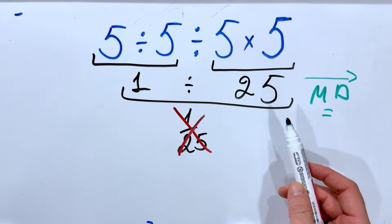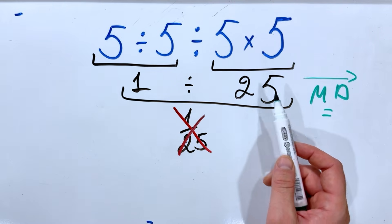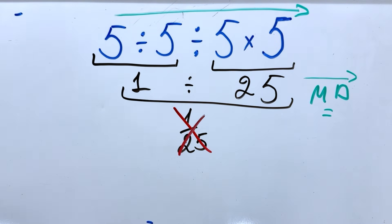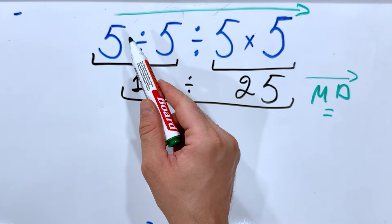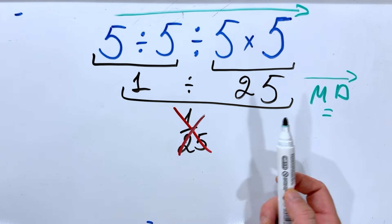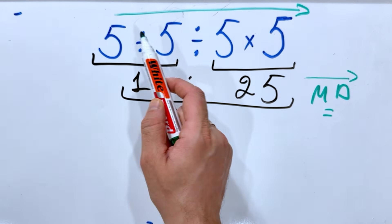In our case, we have division and multiplication. So we must do it from left to right. We cannot do first this division and then this multiplication and then the middle one because it suits us. No, we must do from left to right.